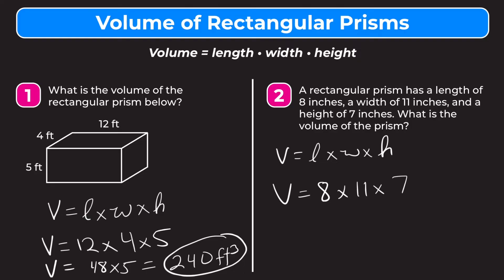So again, if we multiply this through, I like to do the first two first. So 8 times 11 is 88 times 7. And then 88 times 7 equals 616.